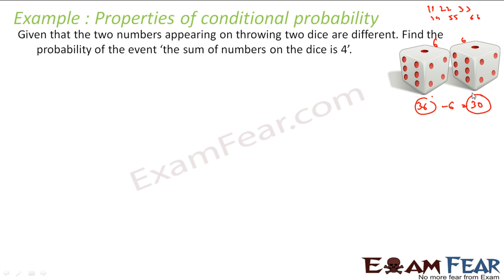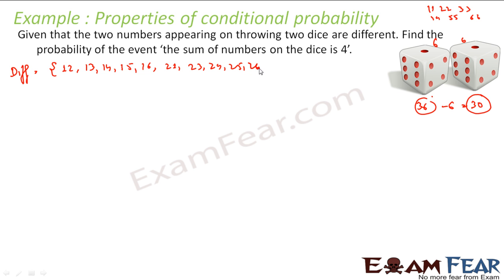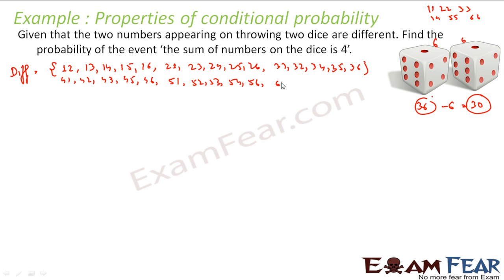If you remove those 6, you get 30. So we have 30 different combinations for which the numbers are different. The 'different' set will have elements such as (1,2), (1,3), (1,4), (1,5), (1,6) — it won't have (1,1). Similarly (2,1), (2,3), (2,4), (2,5), (2,6); (3,1), (3,2), (3,4), (3,5), (3,6); (4,1), (4,2), (4,3), (4,5); (4,6), (5,1)... and so on. This is the 'different' set.